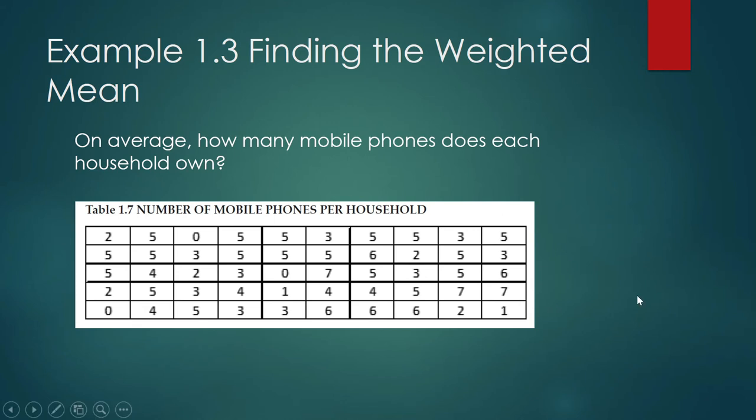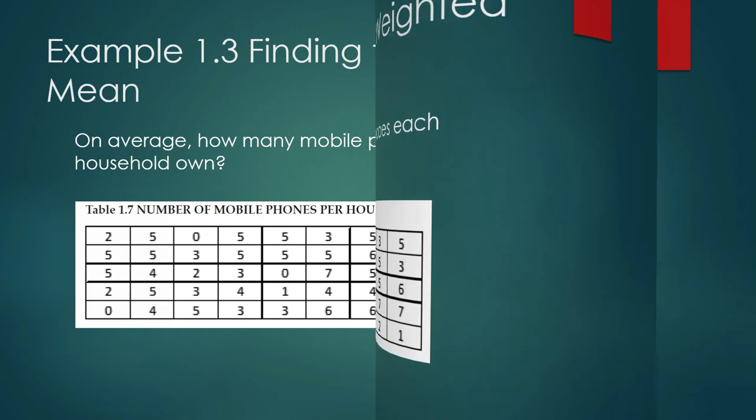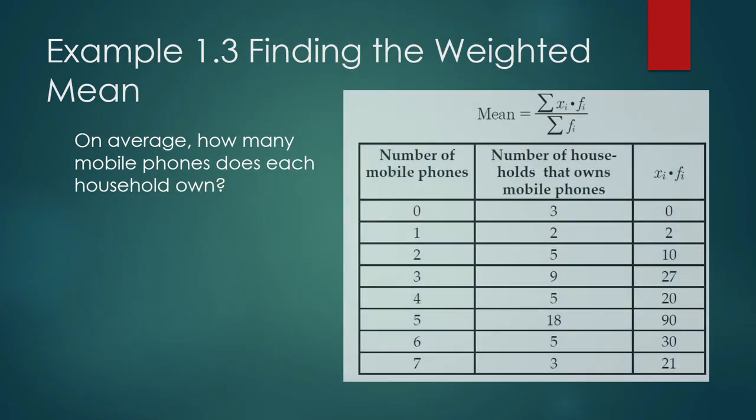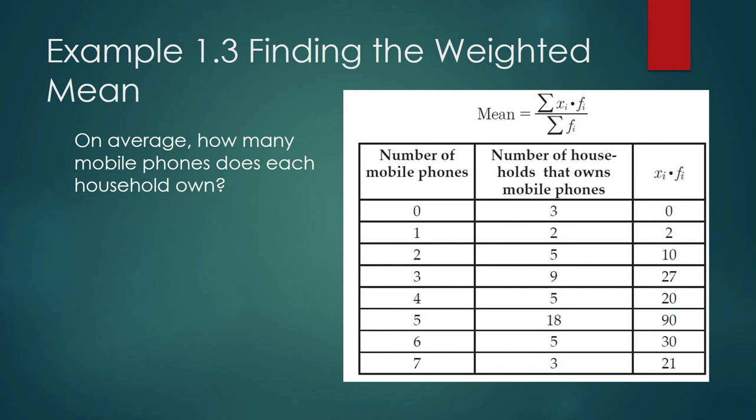But that is cumbersome. That takes time. You know what? In math, if something can be done more quickly, then that is the way to do it. Since we already obtained the frequency distribution of your mobile phone ownership, we can do the weighted mean. Or sometimes we call this the group mean. Group mean, because the data had been grouped according to frequency. That's why you call it the group mean. But you can also call it the weighted mean.